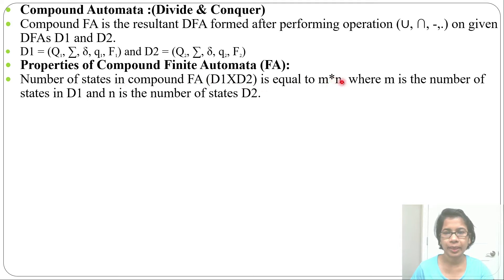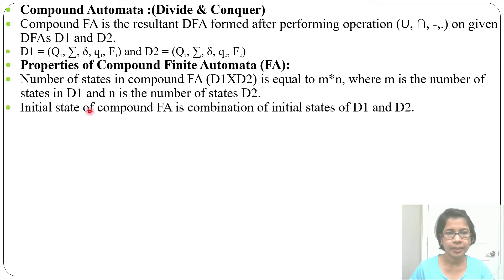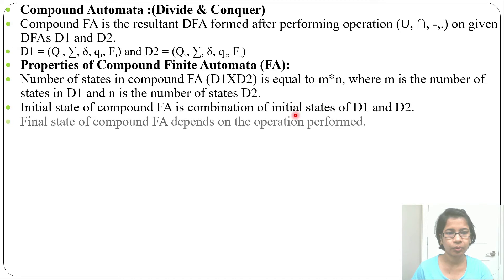The number of states in the compound FA is equal to m multiplied by n, where m is the number of states in D1 and n is the number of states in D2. The initial state of the compound FA is a combination of the initial states of D1 and D2 — both initial states together form the initial state.